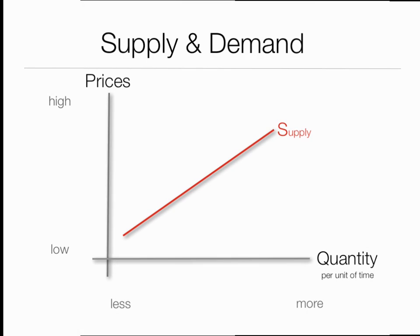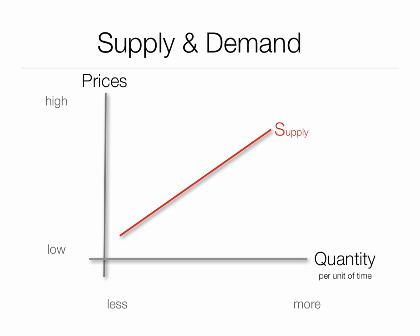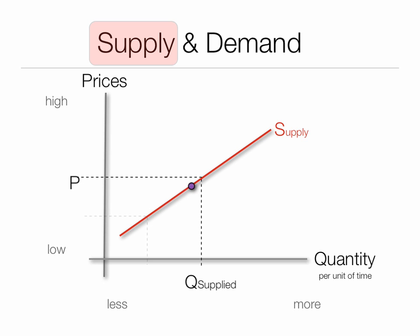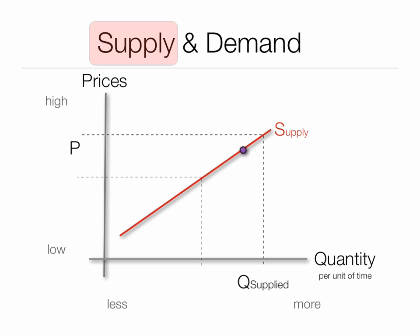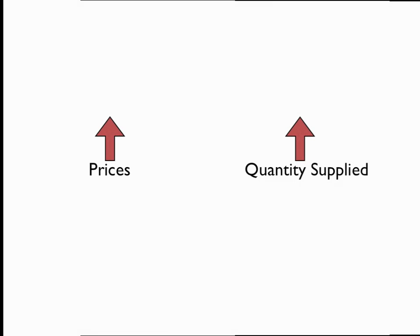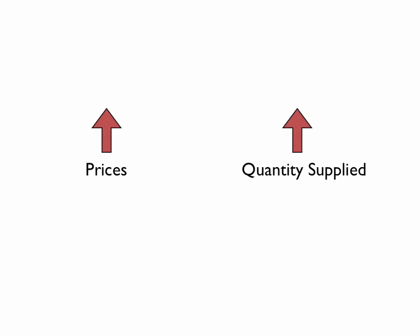We see just the opposite for supply. At lower prices, suppliers are willing to supply less. At high prices, they're willing to supply more. So at low prices, less is supplied, and as prices go up, they're willing to supply more. Prices and quantity supplied move in the same direction.